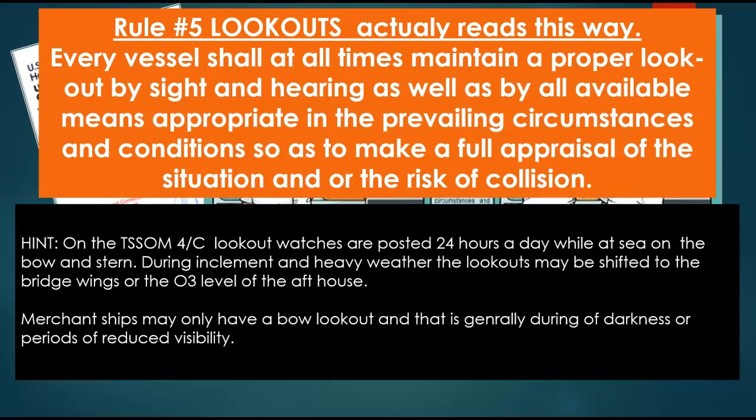On the TSON, fourth class lookout watches are posted 24 hours a day on the bow and the stern — that's your assigned position. During inclement or heavy weather where it might be dangerous to be out on the bow or stern, those lookouts may be shifted to the bridge wing at the wheelhouse level, on the O3 level of the aft house, or under the reception deck area — that O3 gathering area. Merchant ships are a little different; they may only have a bow lookout, and generally only during hours of darkness or periods of reduced visibility.